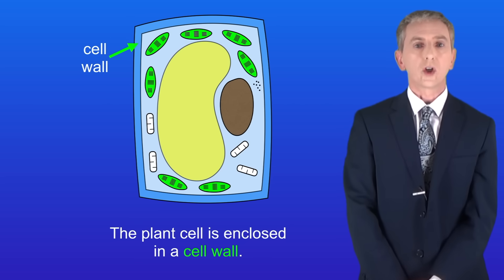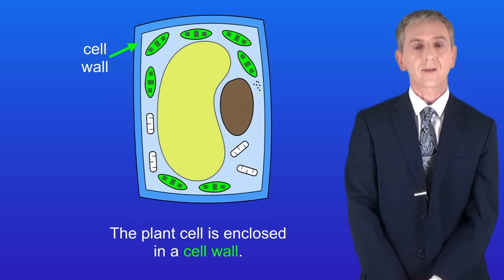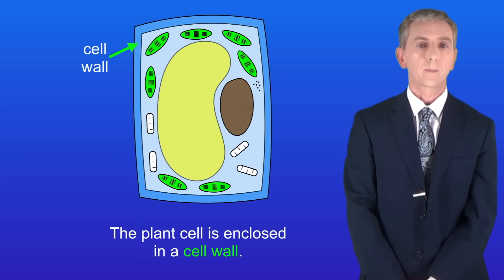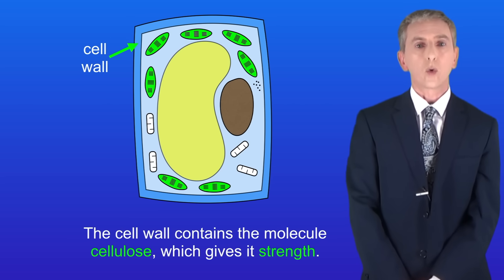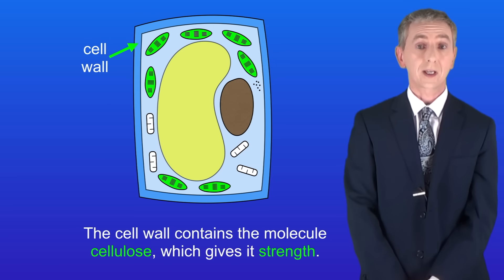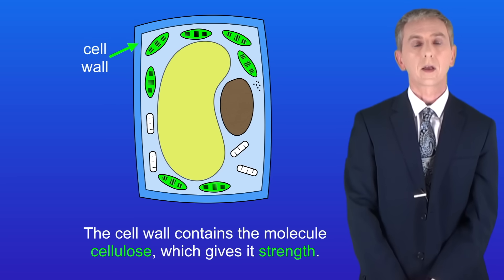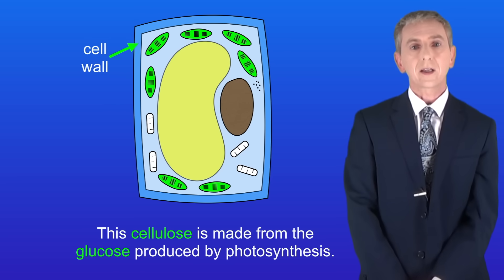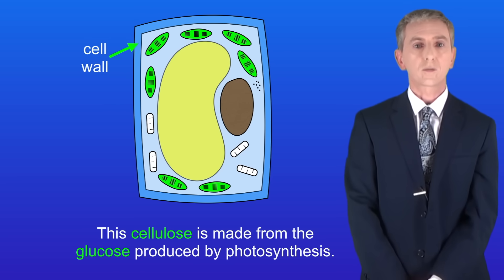In a previous video we saw that the plant cell is enclosed in a cell wall. The cell wall contains the molecule cellulose, which gives it its strength. This cellulose is made from the glucose produced by photosynthesis.